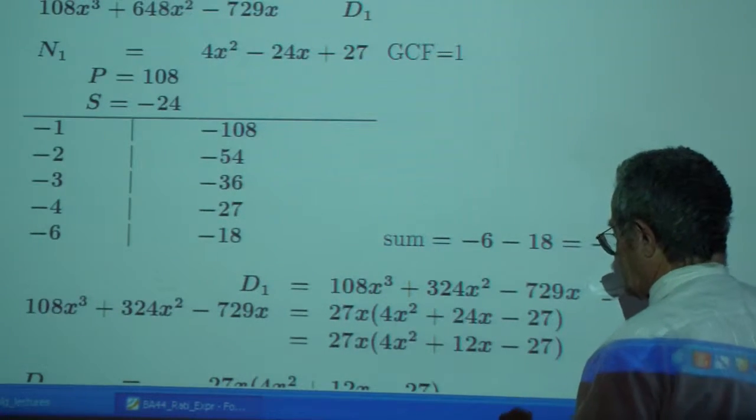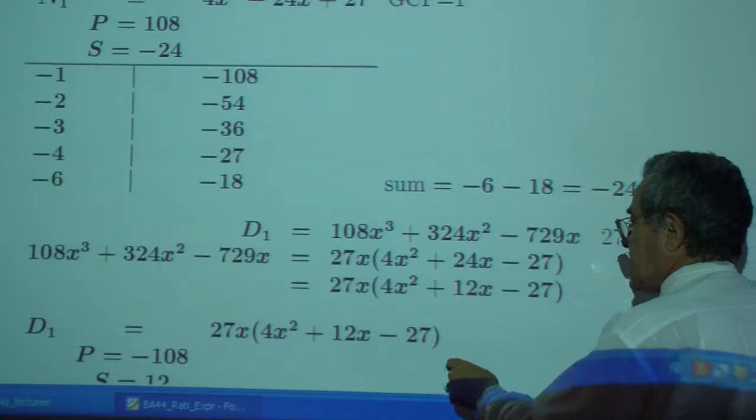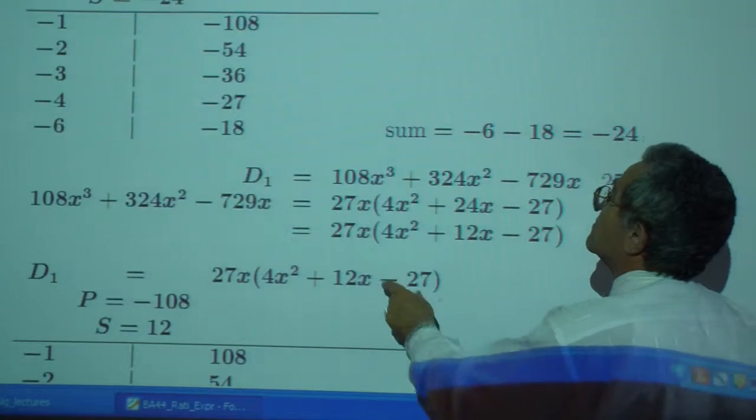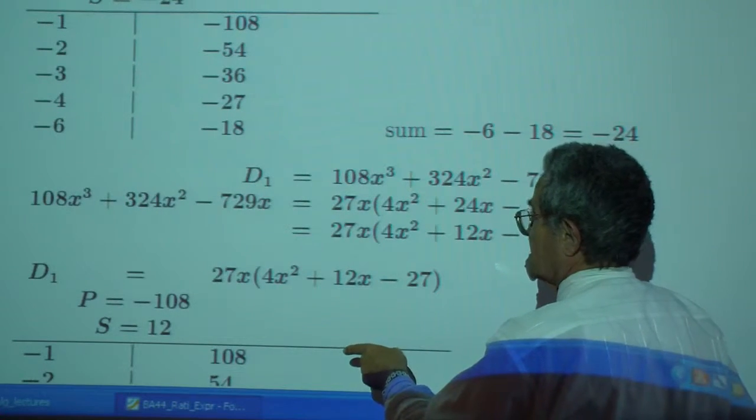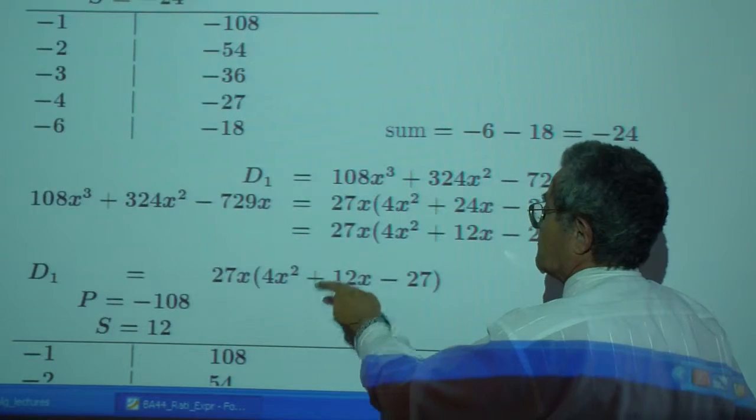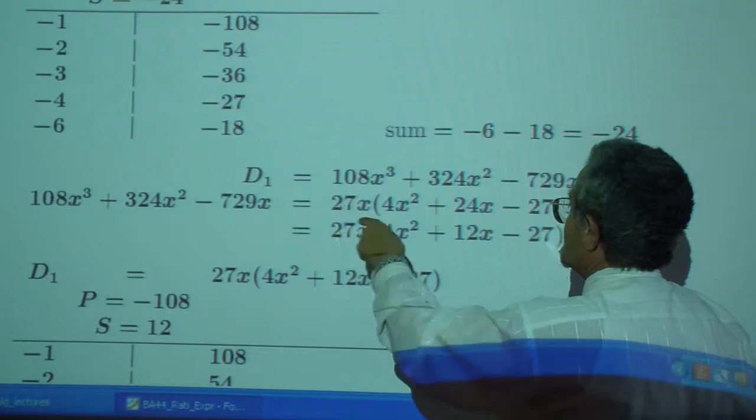That's the first step, greatest common factor. And then you have, I have this twice. No, I guess I have it for 108. Oh, that was the numerator right here.